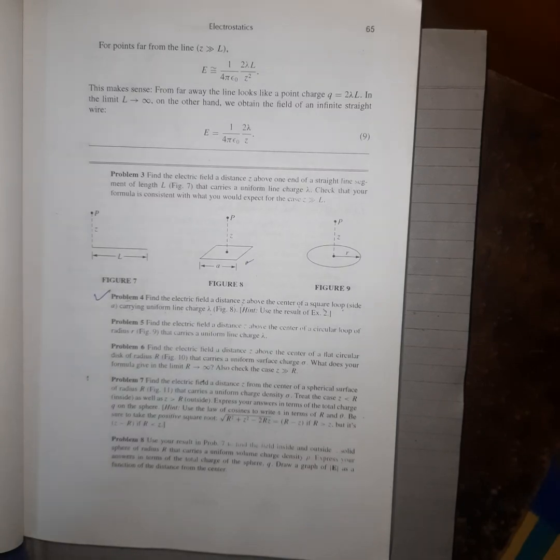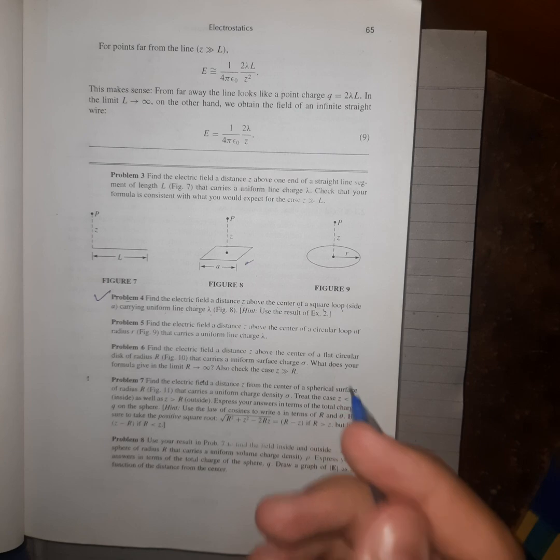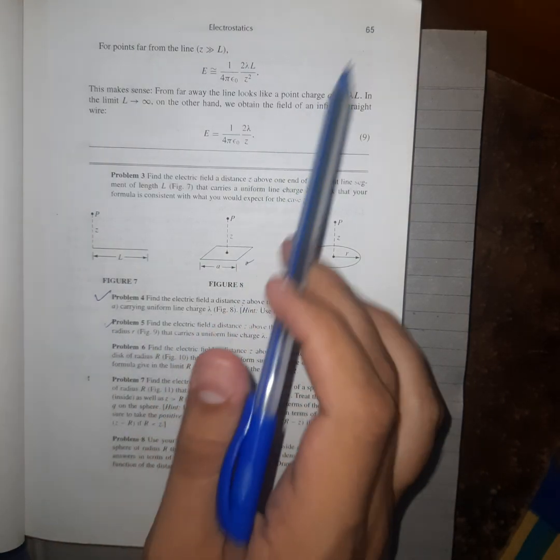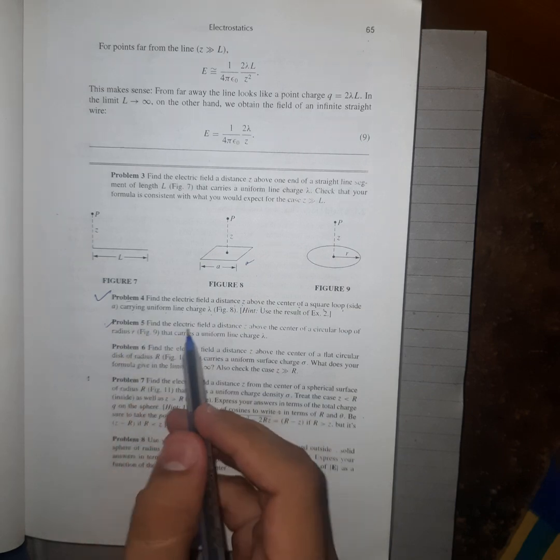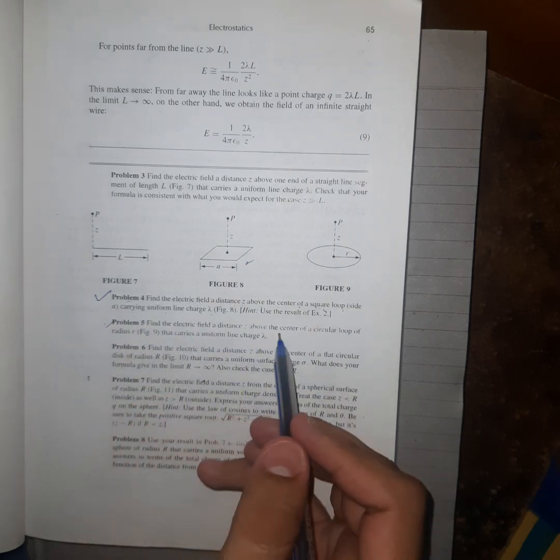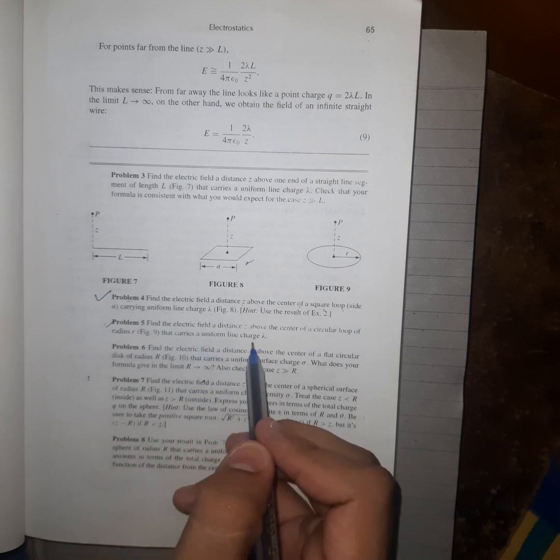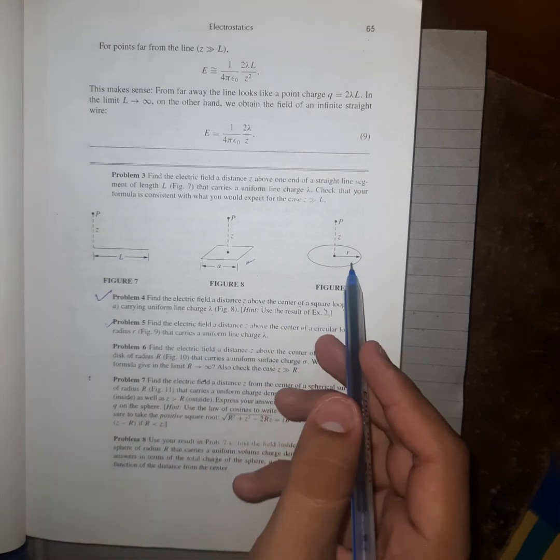So hello everyone, welcome back. Today we are going to start Problem Number 5, page number 65. Find the electric field at a distance z above the center of a circular loop of radius r that carries a uniform line charge lambda. Figure 9, okay. So let's start the problem.